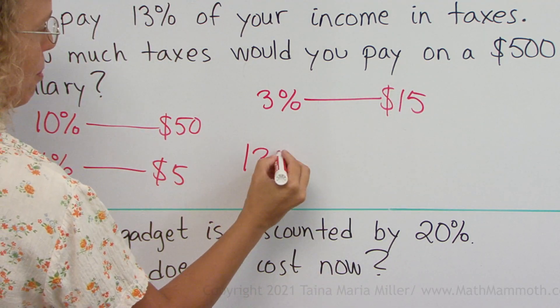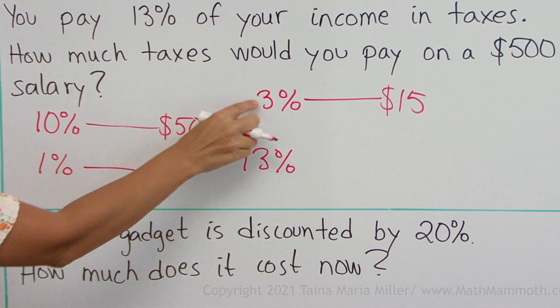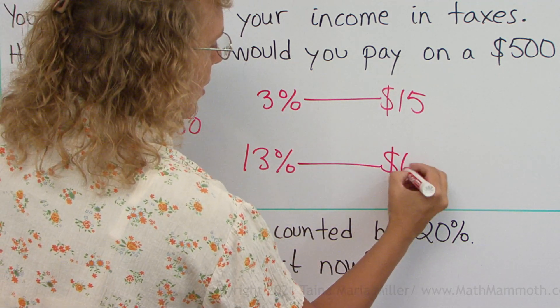And lastly, 13%. Now I take the 3% and the 10% and add. I take the $50 and $15, and I add and I get $65.